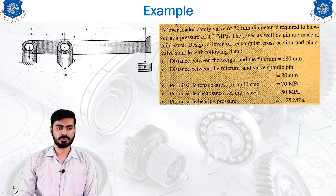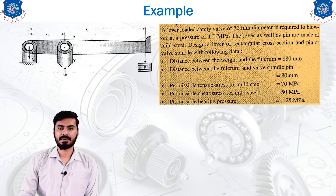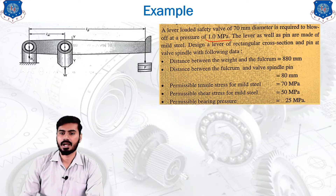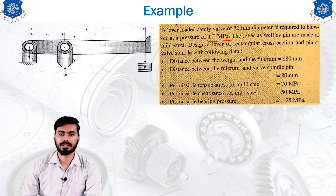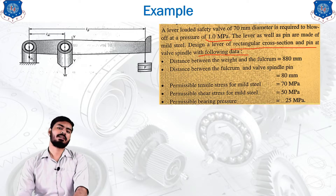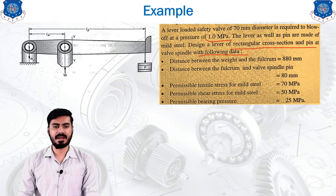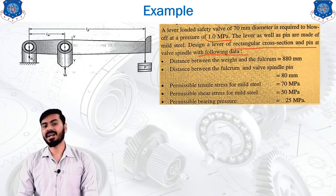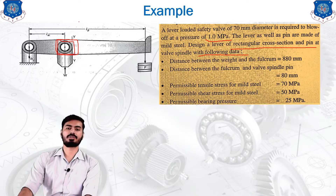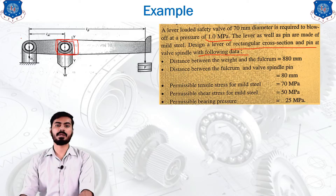The maximum pressure applied on the lever during working condition is 1 mega pascal. The lever as well as the pin are made up of mild steel. We need the cross section and the pin dimensions at the valve spindle and not at the fulcrum — that is the major change from the previous two designs.